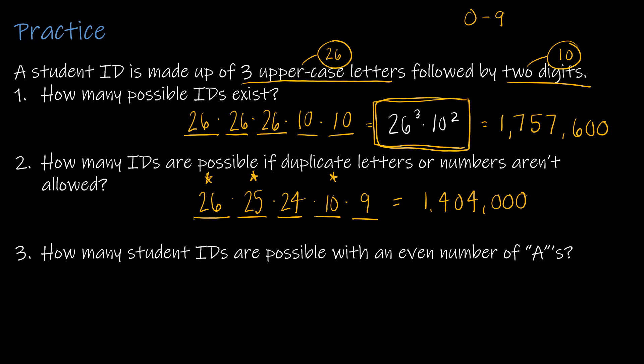The last one, how many student IDs are possible with an even number of A's? This is the one that's a little bit tricky. And again, finding the even number of A's is pretty easy. I could have zero A's, or I could have two A's. I can't have four A's because I only have three uppercase letters. So that's pretty straightforward. Now, what students often do is they'll say, okay, if I have zero A's, then I can have 25 options, which is, this is zero A's, 25 options, which is every letter except for A, times 25 options, times 25 options, and then times 10 times 10, because we're back to no restrictions. We don't repeat the restrictions from two. And that value is 1,562,500.